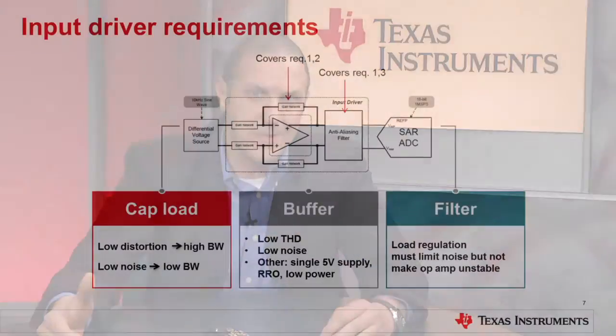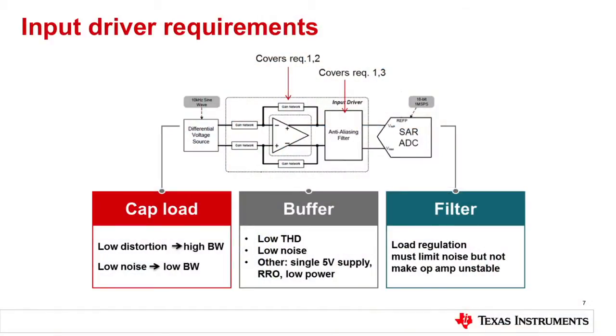Rail-to-rail is important because we're talking about low voltages — five volts and below, maybe even 3.3 volts down to 2.7. If you keep it to such a low voltage, you're going to run into problems — losing codes that are never going to be digitized; failure to digitize a number of codes out of the 65,536 available in 18 bits.